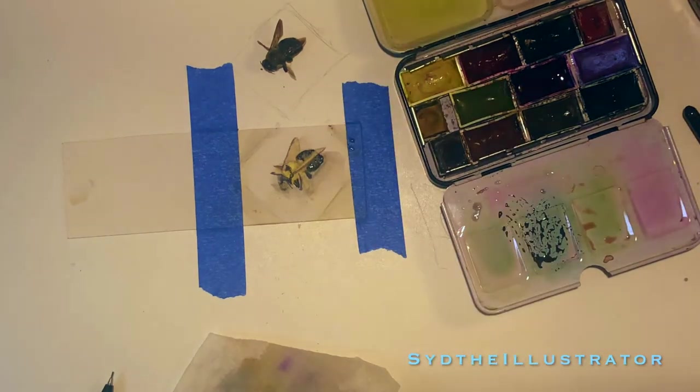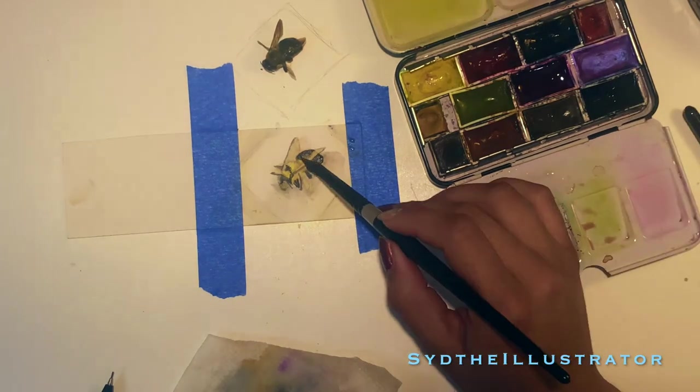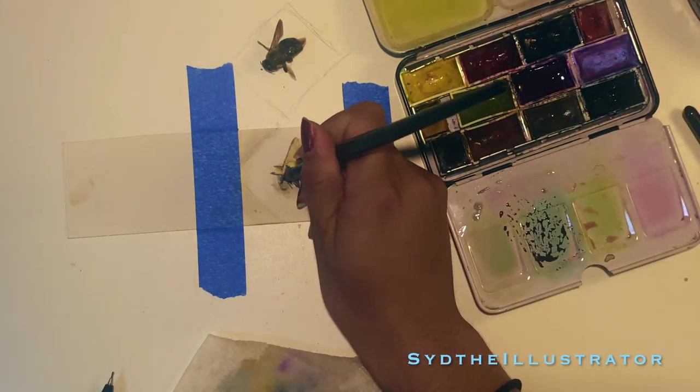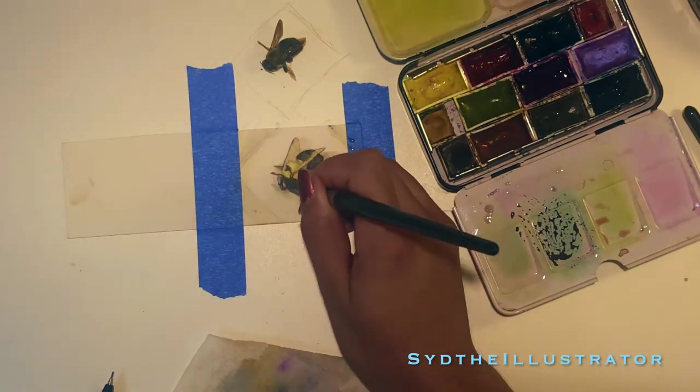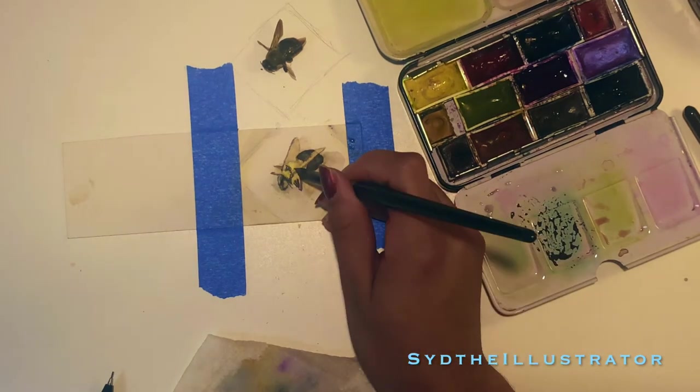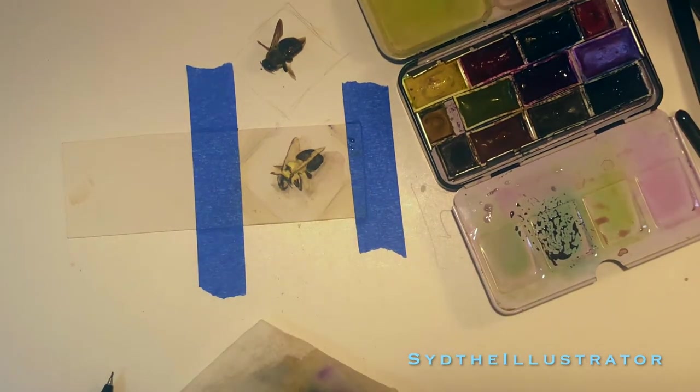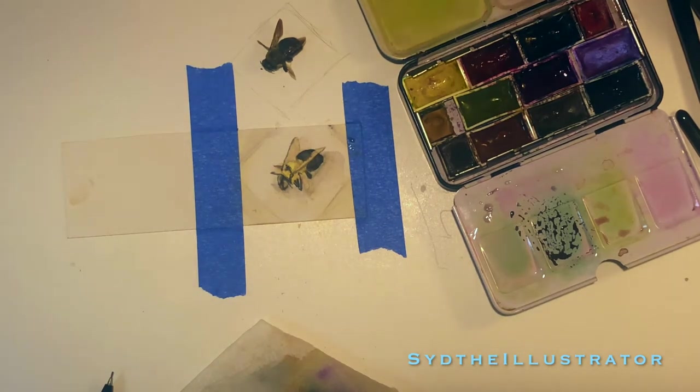So I'm mixing blue with the Payne's gray and burnt umber, burnt sienna mixture to darken it, and I'm outlining the back section of the bee as well as going in and adding more details. The back section is segmented, so I wanted to try and achieve that look with the watercolor. You can kind of see the lines a little bit right here, but I will go in later and define this better.